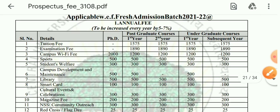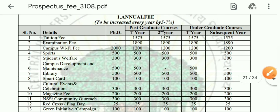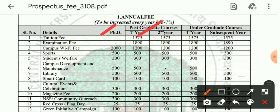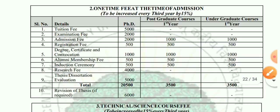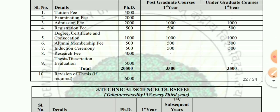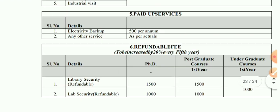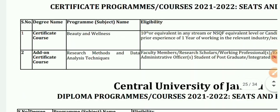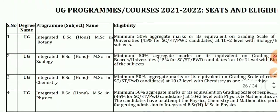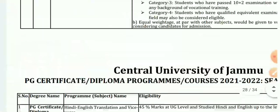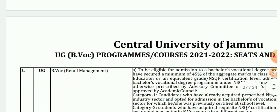The fee structure is given here. According to your course — UG, PG, or PhD — you can see the fee structure for postgraduate, undergraduate, and diploma programs. All program fee structures are given here; you can see all the fee structures. Let's see how to log in to Central University of Jammu.